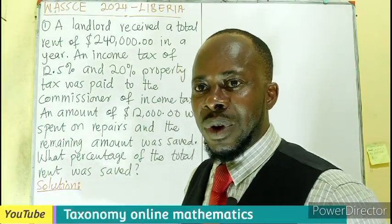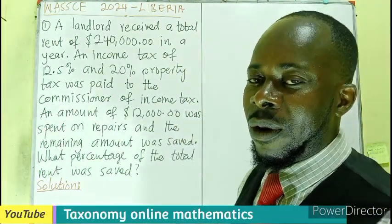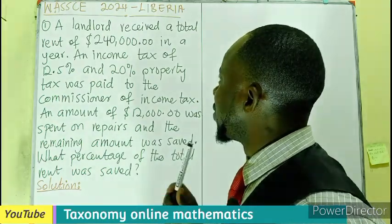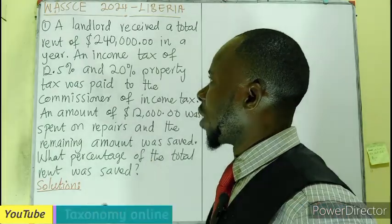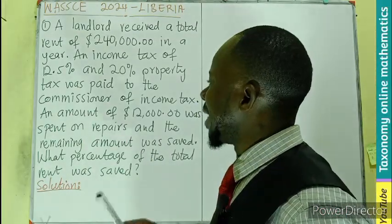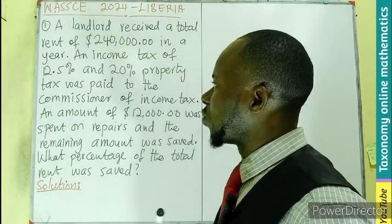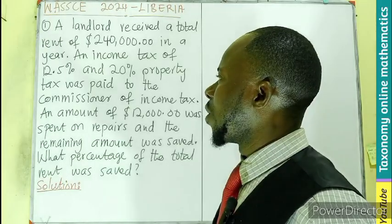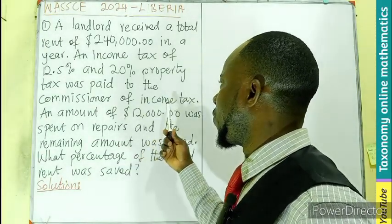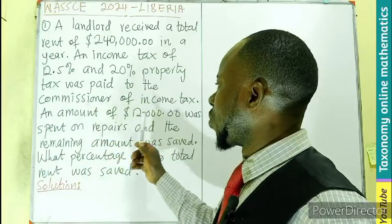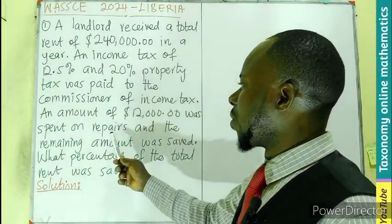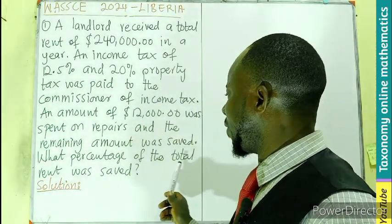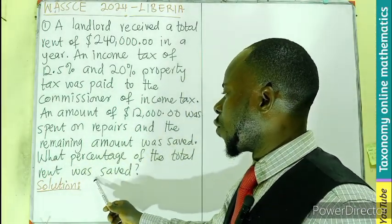Hello, welcome. Let's look at WASI 2024 for the Liberian. The first question: a landlord received a total rent of $240,000 in a year. An income tax of 12.5% and a 20% property tax was paid to the commissioner of income tax. An amount of $12,000 was also spent on repairs and the remaining amount was saved. What percentage of the total rent was saved?